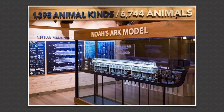On the first deck of the Ark, down at the bow end, you'll see a cutaway model and a big sign on the wall. Our scientists worked for years doing research to determine how many kinds Noah would need on the ark. They've catalogued around 1,400 animal kinds, but we've actually overestimated — we think the number of kinds was less than 1,000.